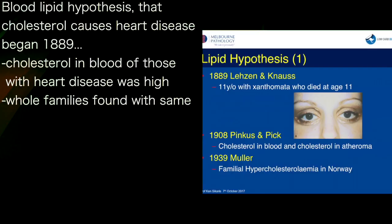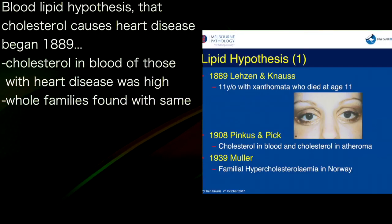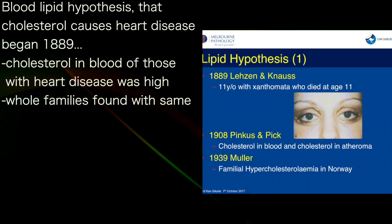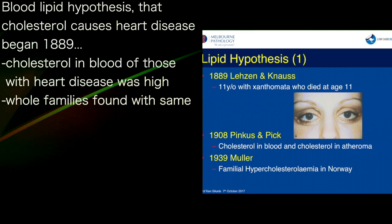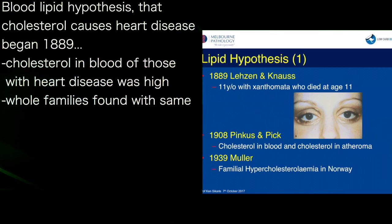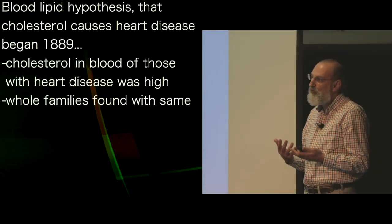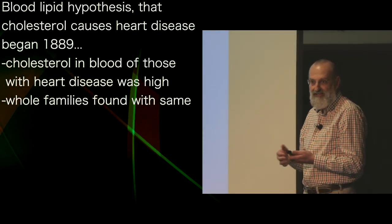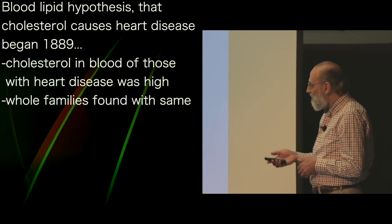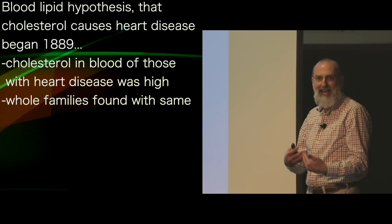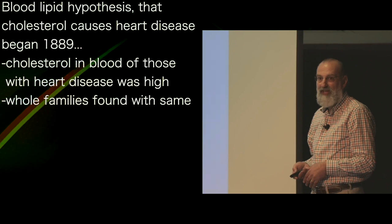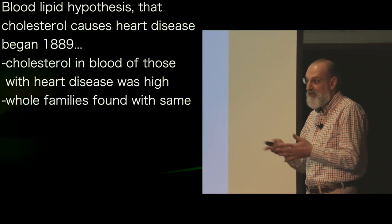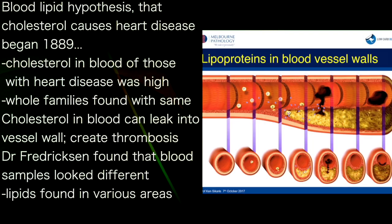The lipid hypothesis — that cholesterol causes heart disease — started off many years ago with the observation that people with cholesterol plaques or atheroma around their eyes or in their limbs also had cholesterol accumulation in their blood vessels and got heart attacks. So it's not unfair that people thought cholesterol causes heart disease. Later, people found that the level of cholesterol in those people's blood was also high, and whole families were discovered with high cholesterol and heart disease. This built the lipid hypothesis.